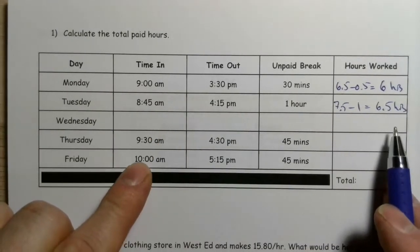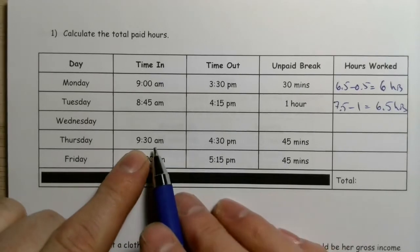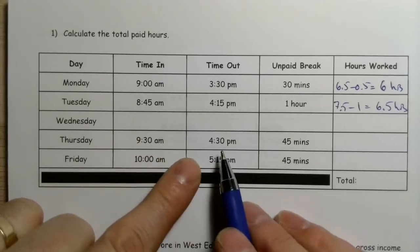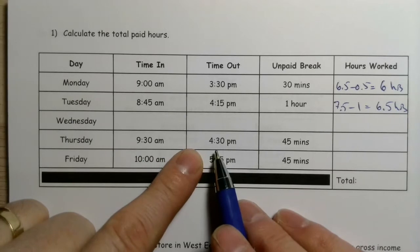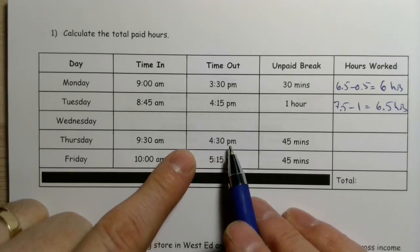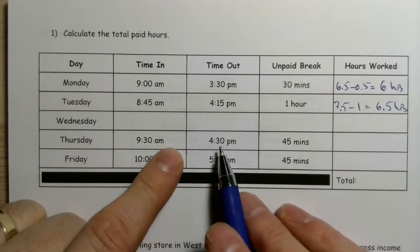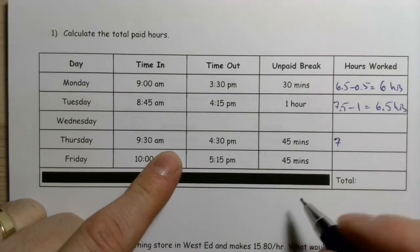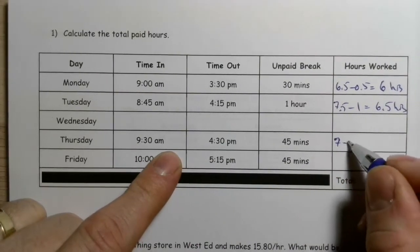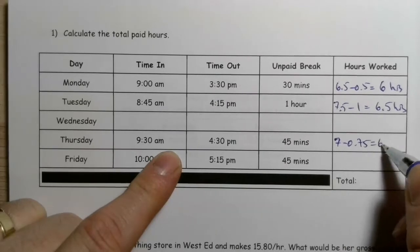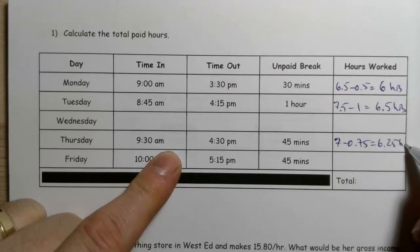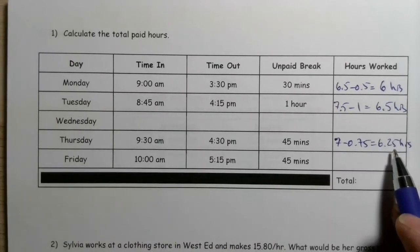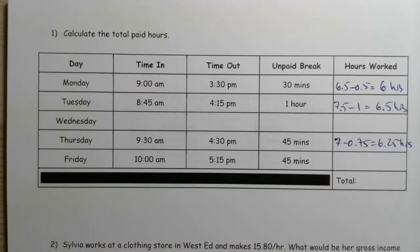Wednesday didn't work. Then Thursday, 9:30 to 4:30. From 9:30 to 12 is two and a half hours, and then 12 to 4:30 is four and a half hours, so that's seven hours total. Seven minus 0.75 gives us six hours and 15 minutes, or 6.25 hours.